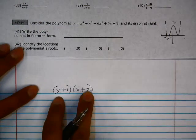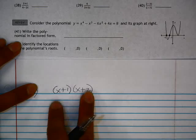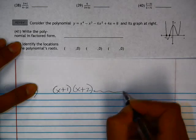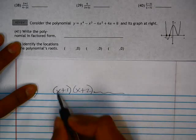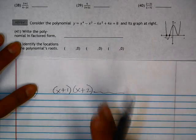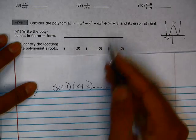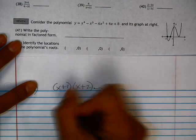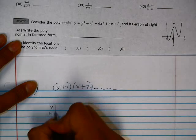Since we know two of the factors, we can use division to determine what the remaining factors are. So we have some other factors here that multiplied by these two would give us this polynomial. Let's go ahead and start by dividing our polynomial by one of these factors. It doesn't matter which one you choose, but just divide by one of them to begin.